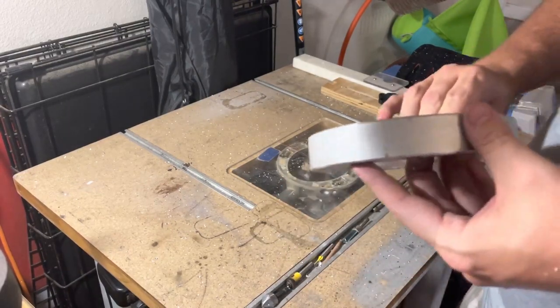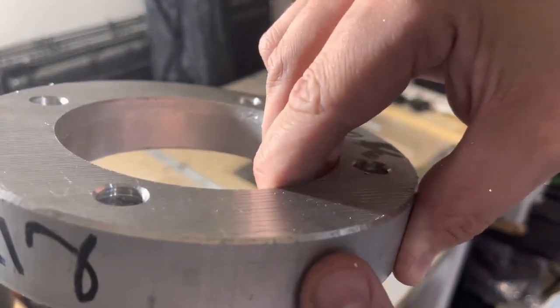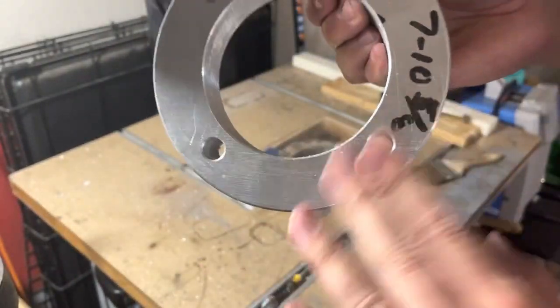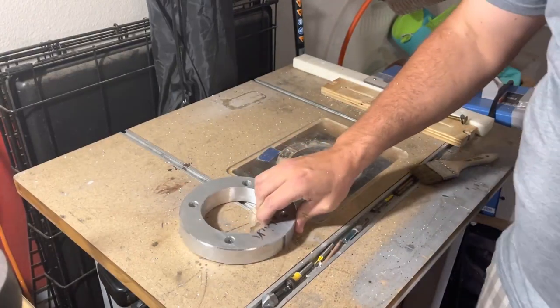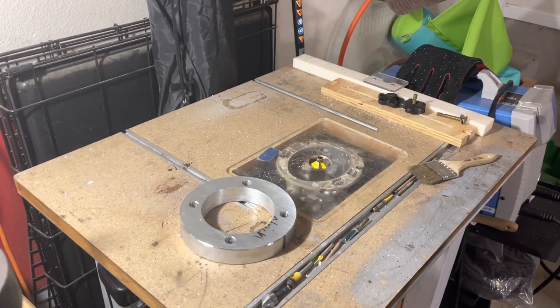There we go, we've got nice chamfered edges. I don't know if you can see it, cut it on the inside and out. And now we'll just do a lot of sanding and we'll bring this down so it looks all nice and shiny and then I'll brush it up, get my brushed aluminum look and we'll be done.